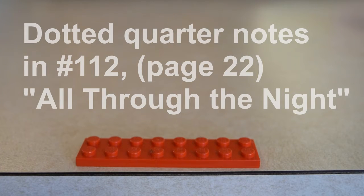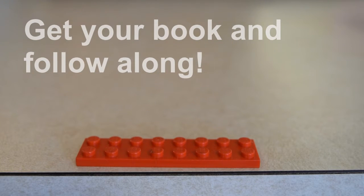Next, we're going to look at how dotted quarter note rhythms fit into the melodies that are on page 22 in your book. We're going to start by looking at number 112, All Through the Night. I suggest you get your book and follow along with the notation there as I build them with the Lego bricks.